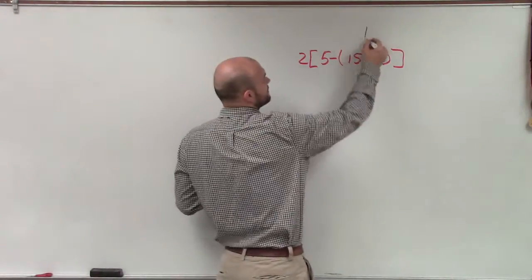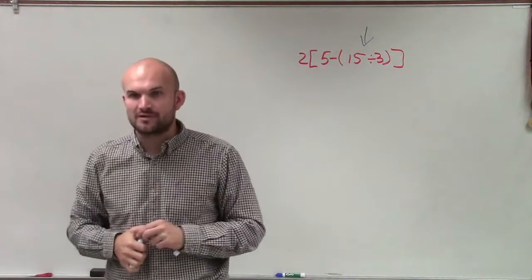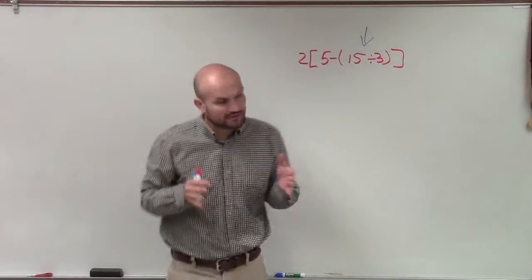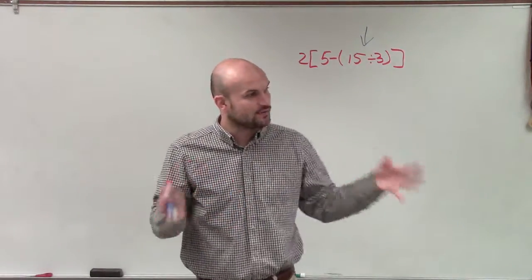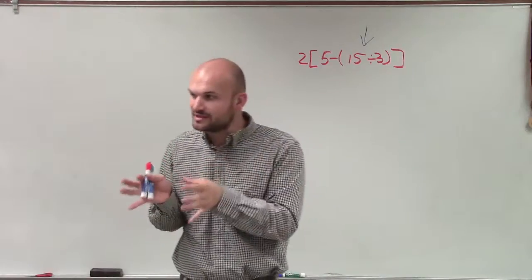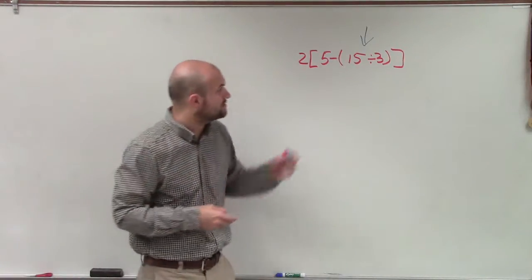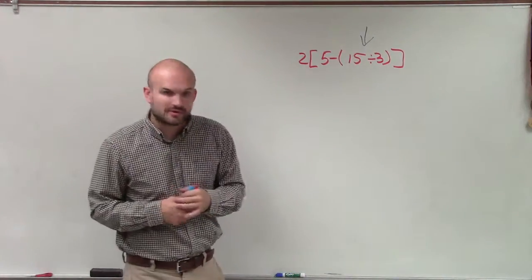Therefore, my first step that I need to do is 15 divided by 3, because that is the first operation that I can apply within parentheses that are within brackets. So the innermost parentheses or grouping symbols, that's what I'm going to do first. So 15 divided by 3 is 5.